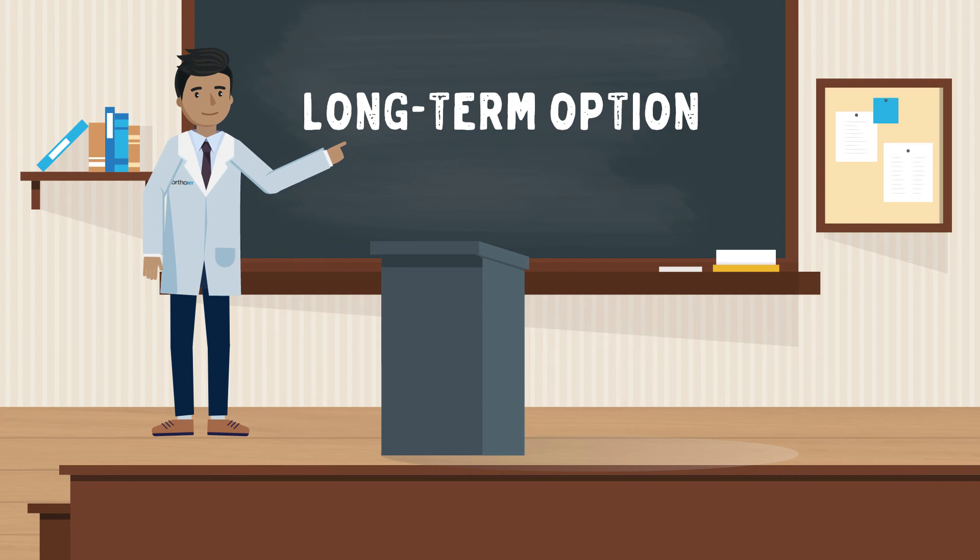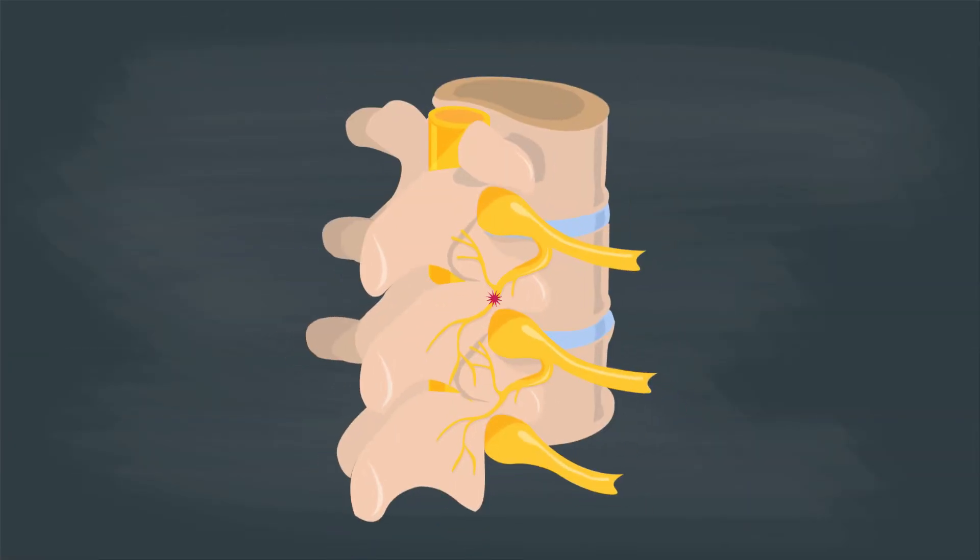If we all feel good that the facet joints are the pain source, we can discuss a long-term option. Using a similar needle under x-ray guidance, we can apply heat directly to the nerve and turn it off for longer periods of time, up to years.